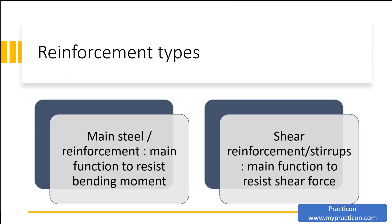Reinforcement types: we have two types, main steel and shear. Main steel is used to take care of the bending moment, and shear reinforcement is used to take care of the shear force.